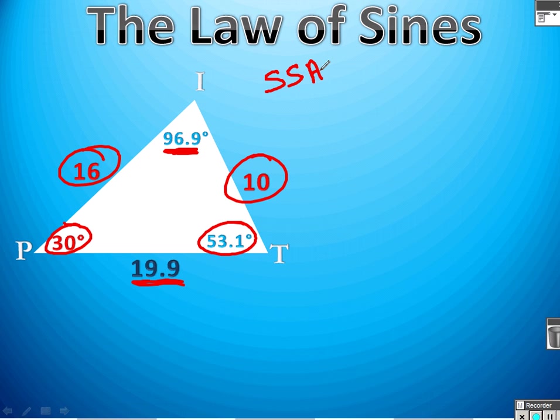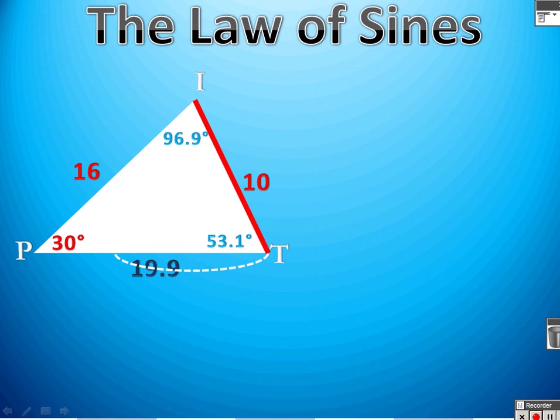Maybe you remember, or maybe you don't, but side-side-angle was not a valid congruence theorem when we did geometry. Because there was a possibility of getting two different kinds of triangles every time. So, let's kind of take a deeper look at how this one looks with side-side-angle.